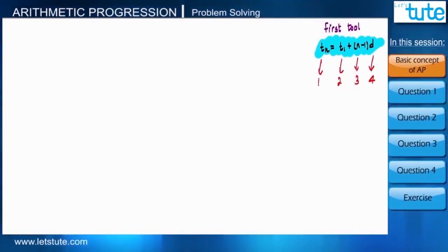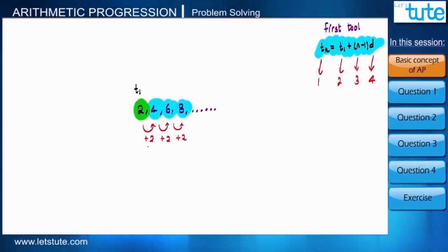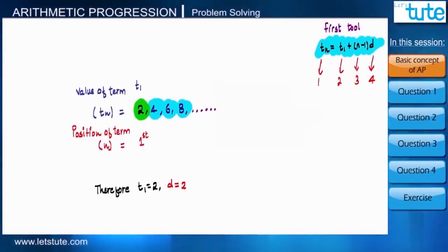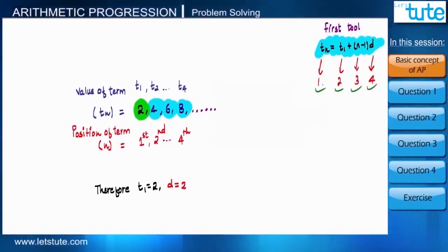To understand these parameters, let us consider the sequence 2, 4, 6, 8, and so on. The sequence starts with 2, so t1 equals 2. The difference between consecutive numbers — 2 and 4, 4 and 6, 6 and 8 — is 2, so the common difference d is 2. Here n represents the position of a term, and tn represents the value of the term at that particular position.